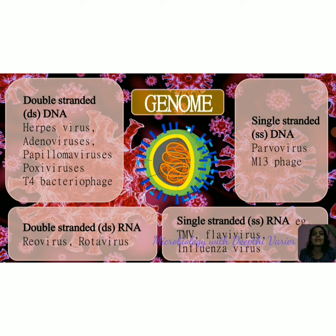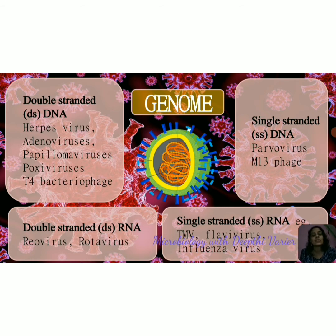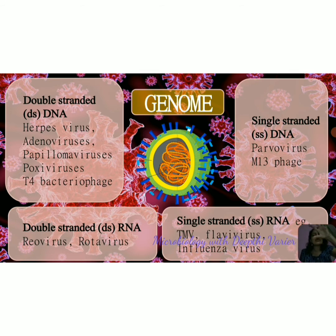Examples under each group: double-stranded DNA viruses include adenovirus and herpes virus; single-stranded DNA viruses include parvovirus and M13 bacteriophage; double-stranded RNA viruses include reovirus and rotavirus, which cause infections in children; and single-stranded RNA viruses include TMV (tobacco mosaic virus), rabies virus, and influenza virus.